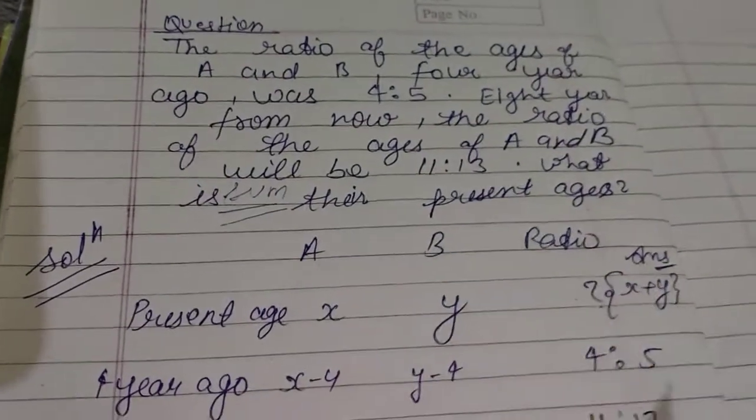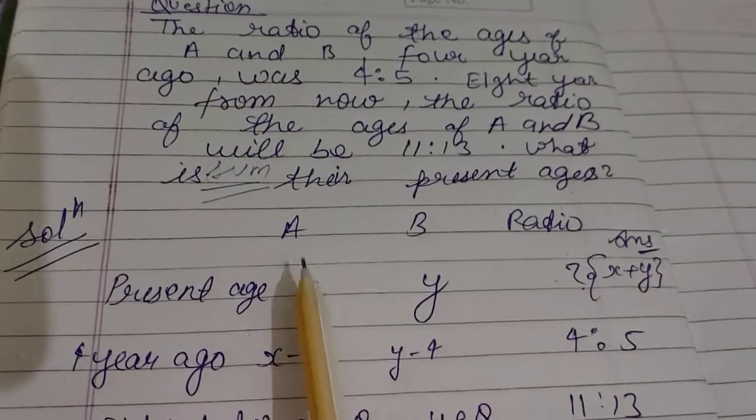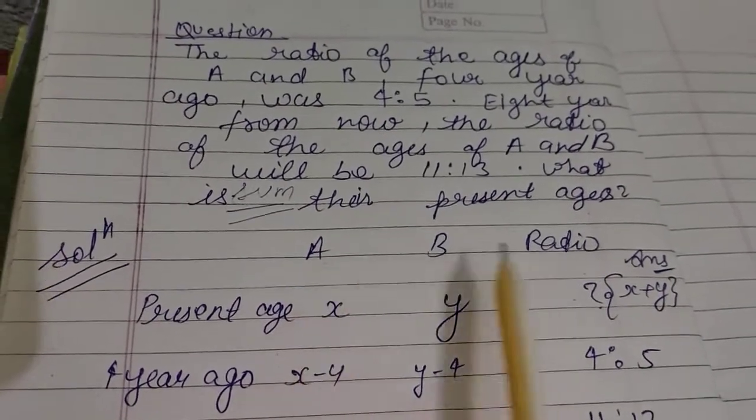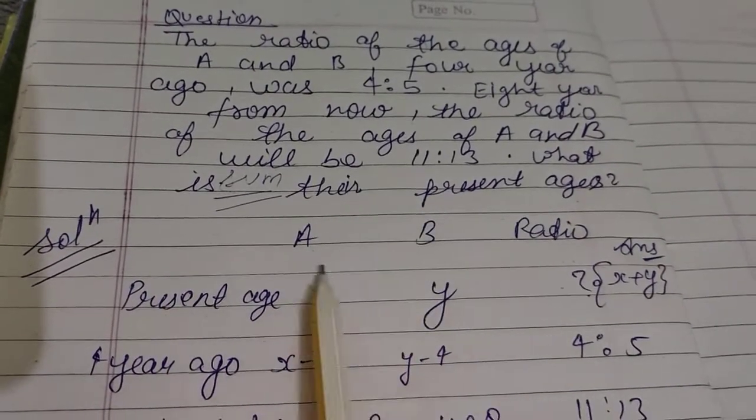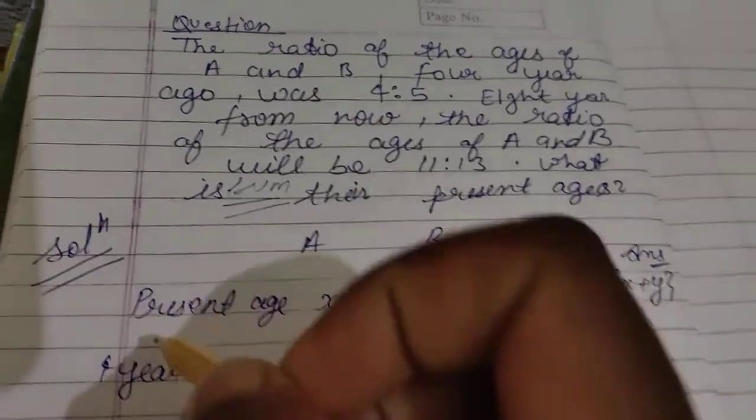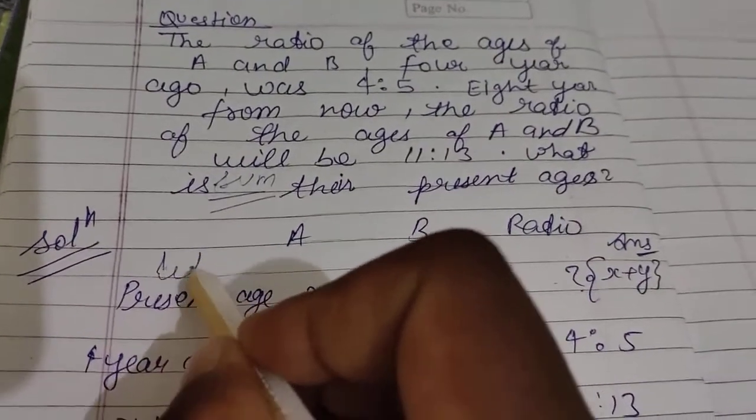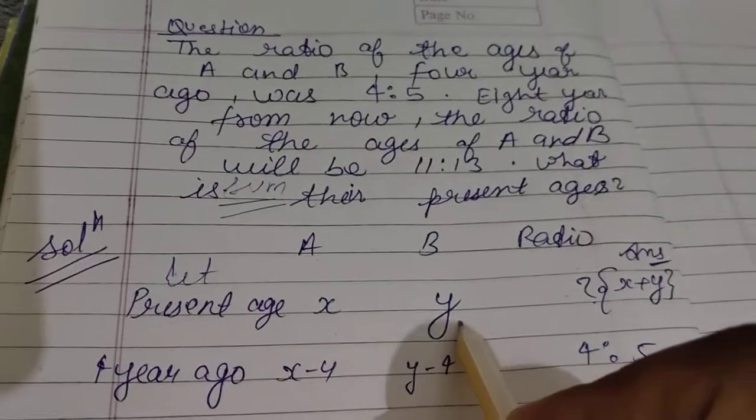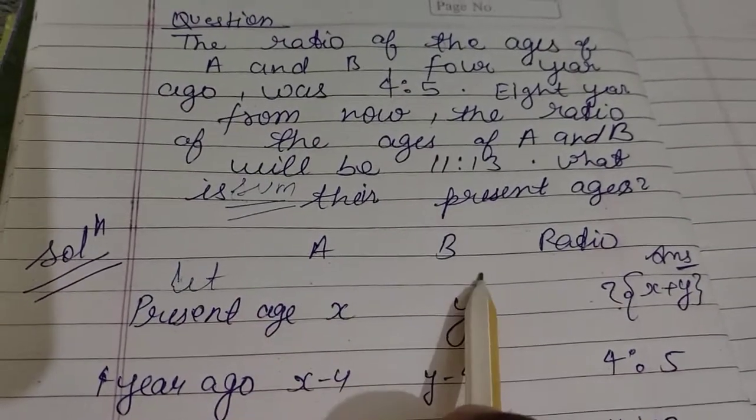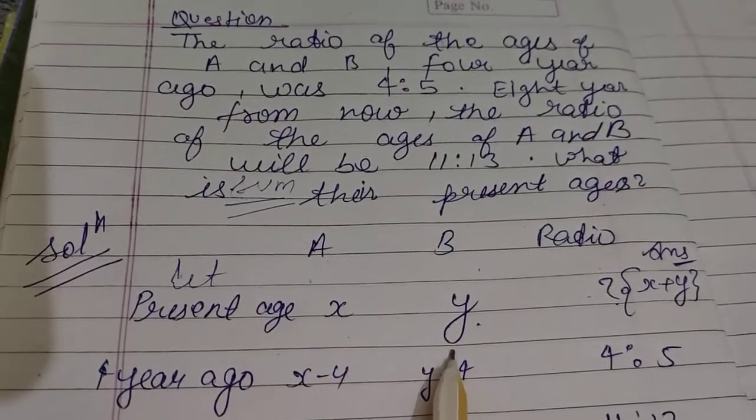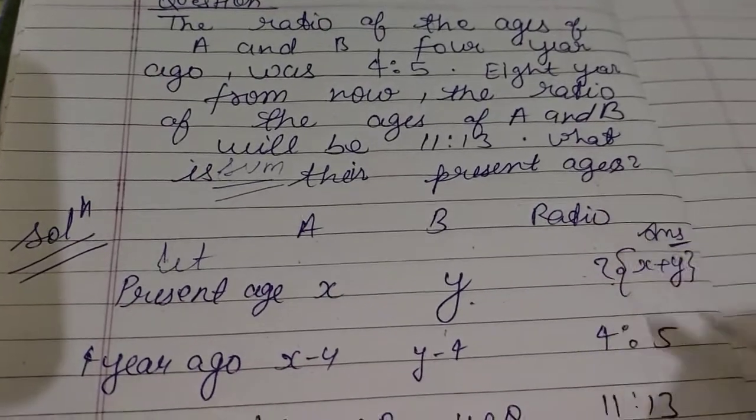So if we understand the problem, we will name the variables. Let us consider the present ages of A and B as x and y.